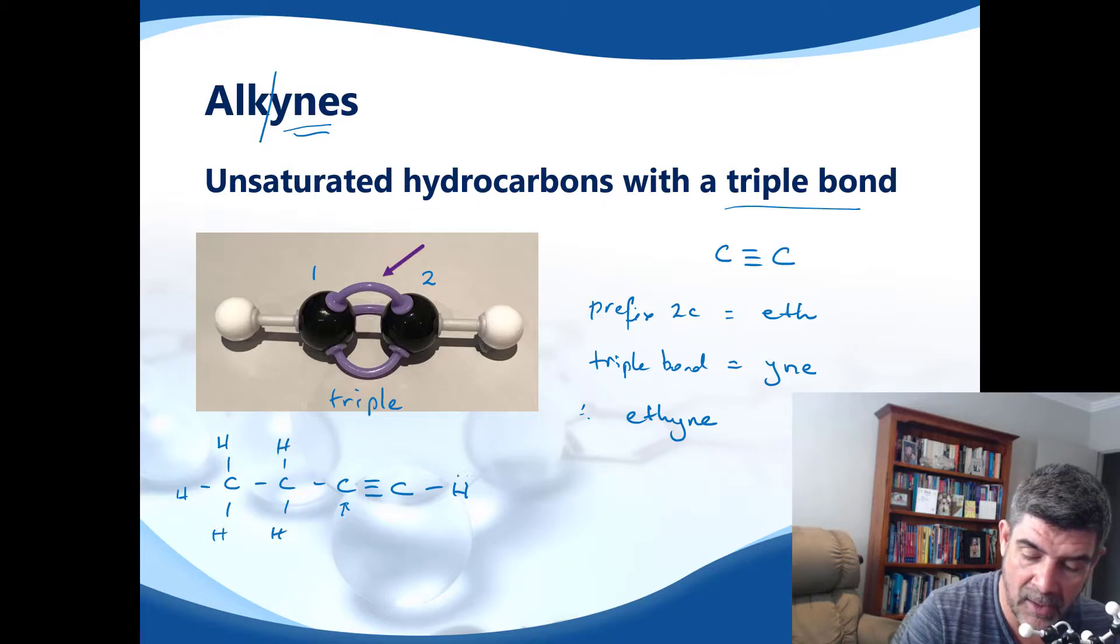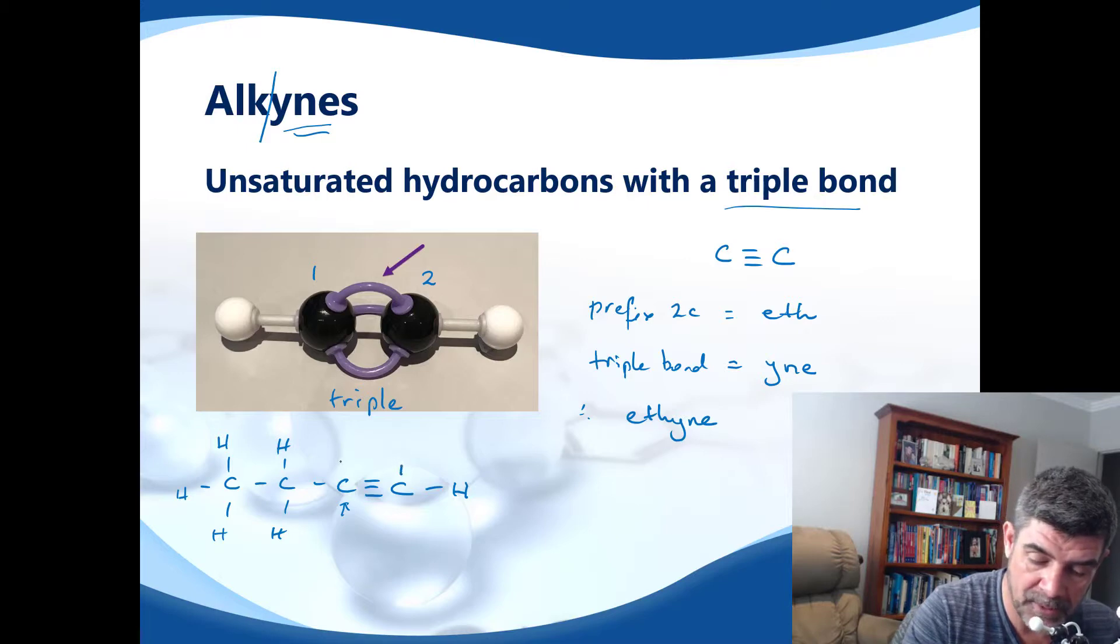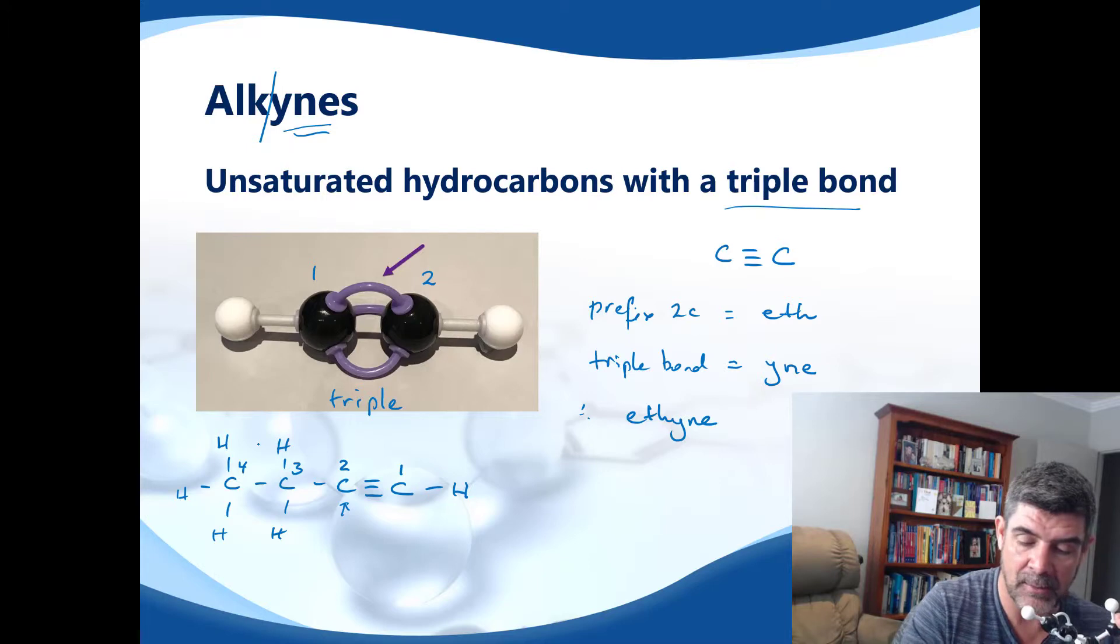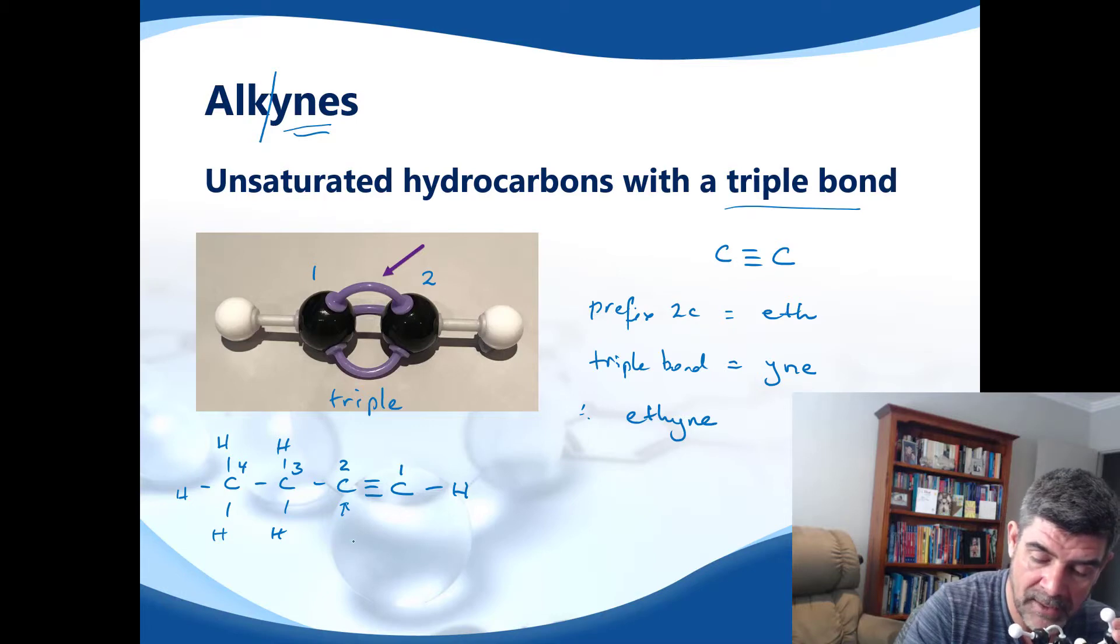And this particular compound has the triple bond between the first and the second carbon. Of course, I don't go from the other end because that would give me a three and a four. And my rule is smallest numbers. So the smallest number here is the number one. So four carbons is bute. So this would be bute-1-yne.